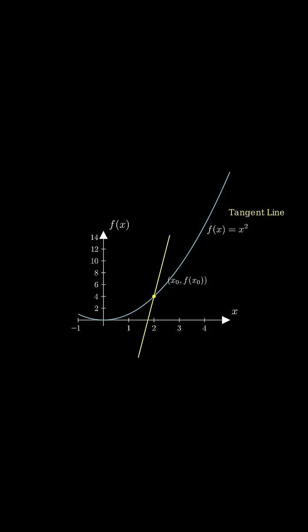The slope of this tangent line is the instantaneous rate of change or isse kehte hai derivative. So simple shabdo main, the derivative tells us how fast a function is changing at exactly one point.